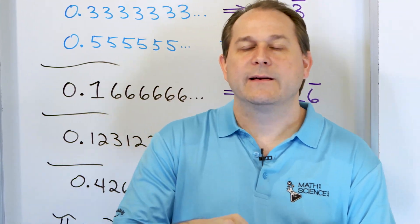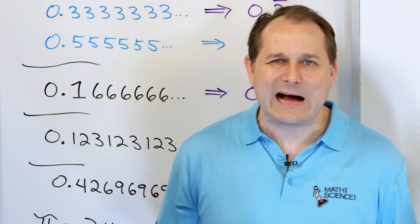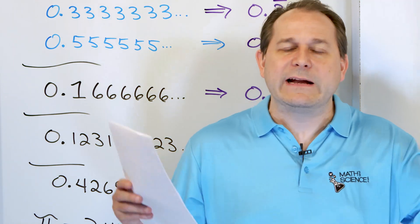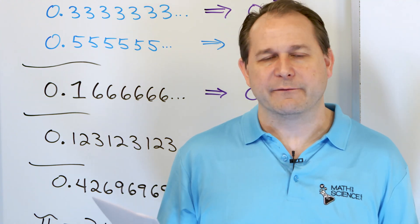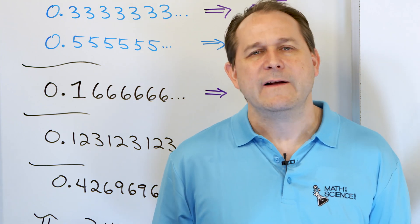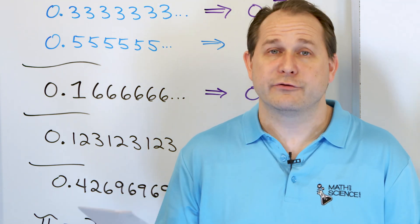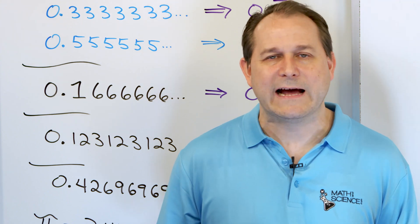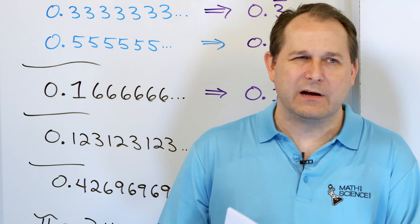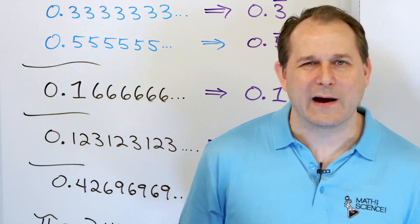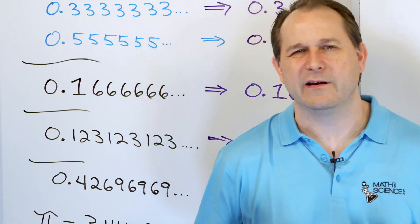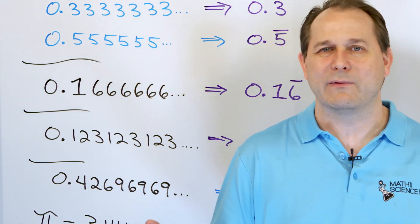Pi is a special number. There are other numbers in math that are also special like that — they're called irrational numbers. Something irrational is like somebody that does unpredictable things. Pi is irrational because it just goes on and on in an unpredictable way. That's why it's called irrational.